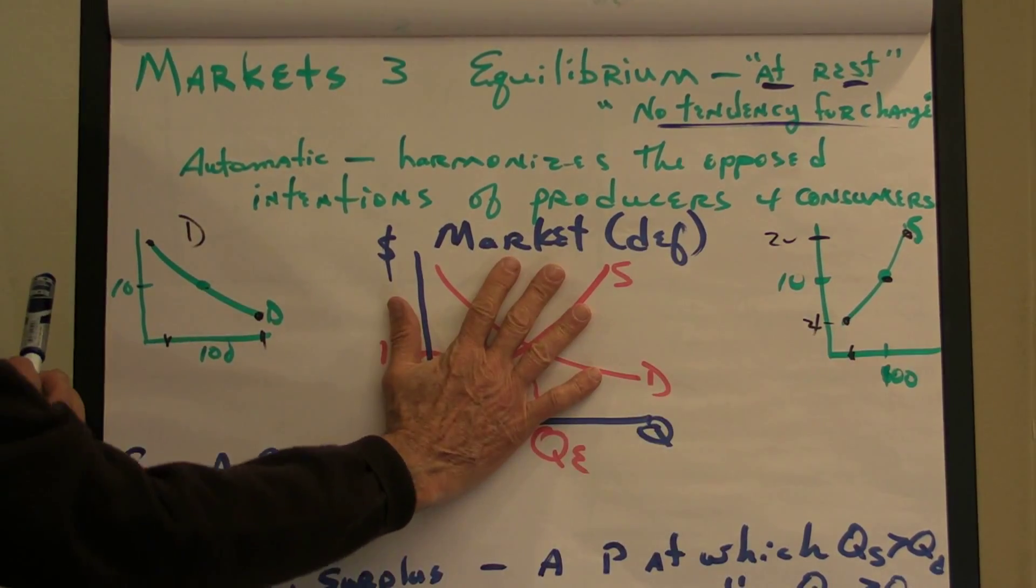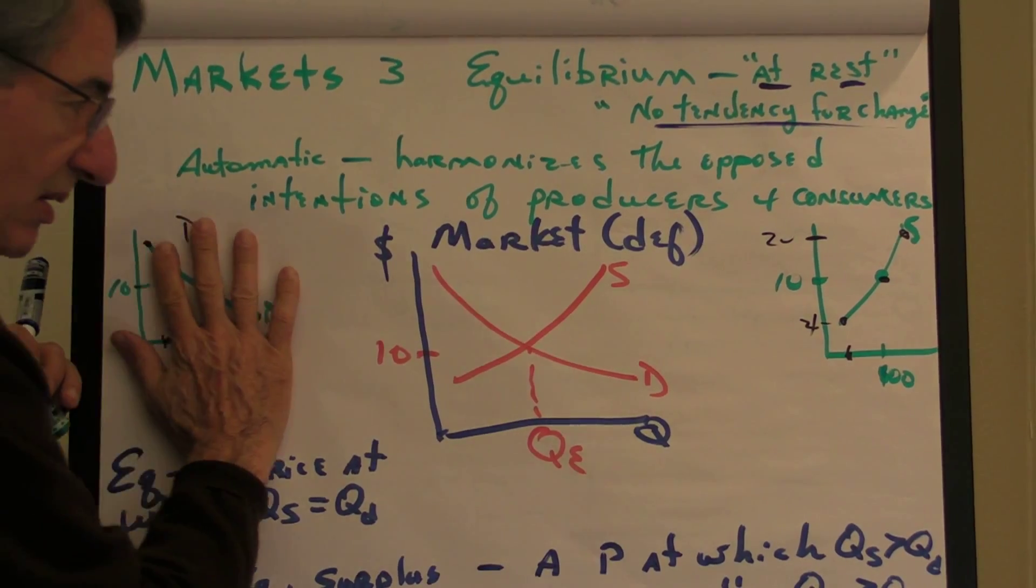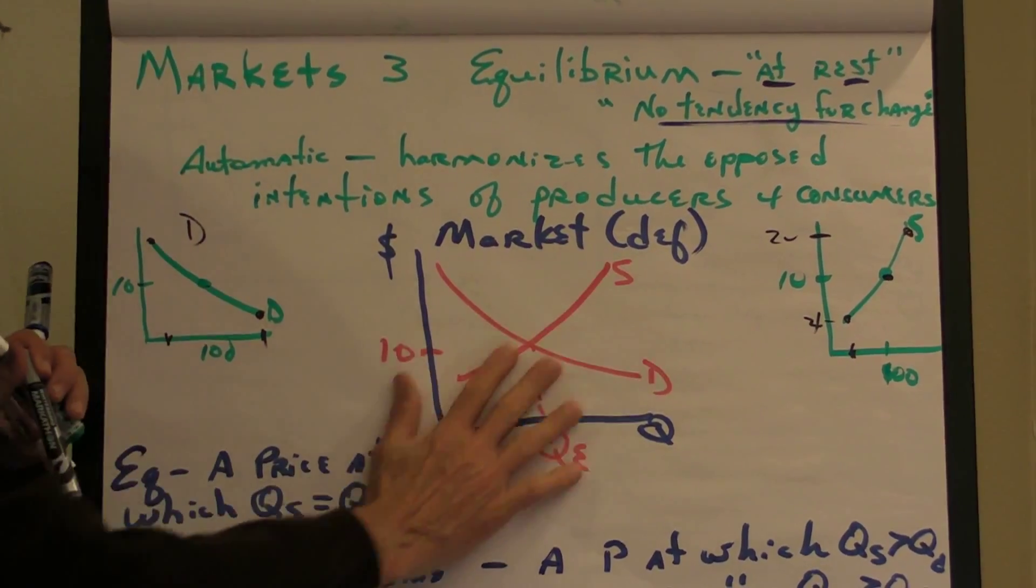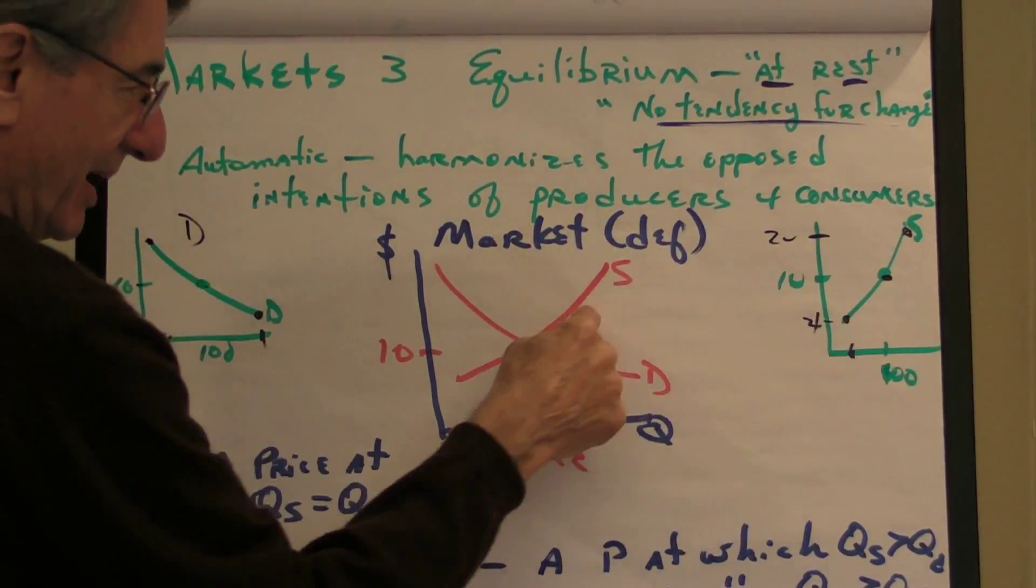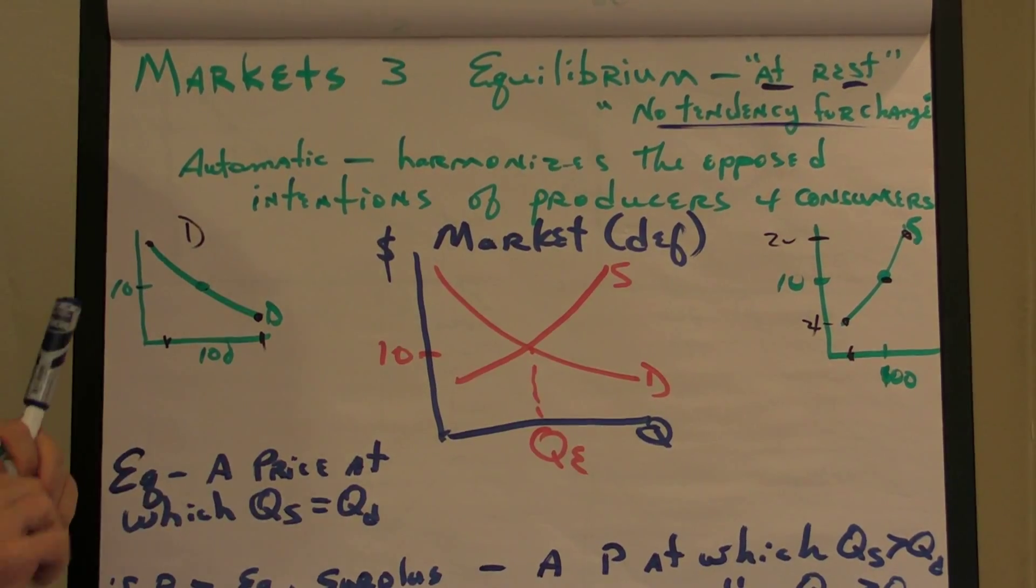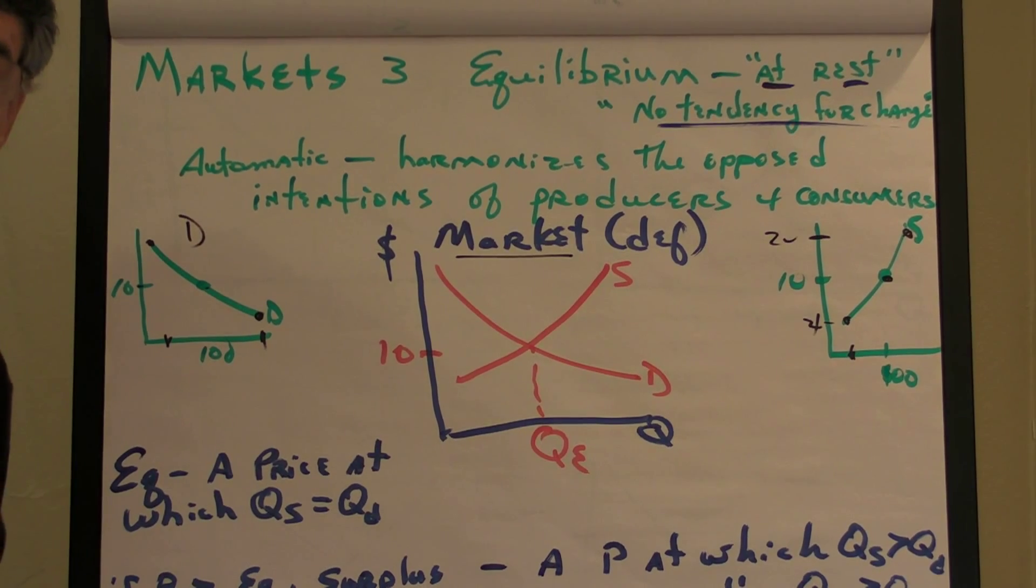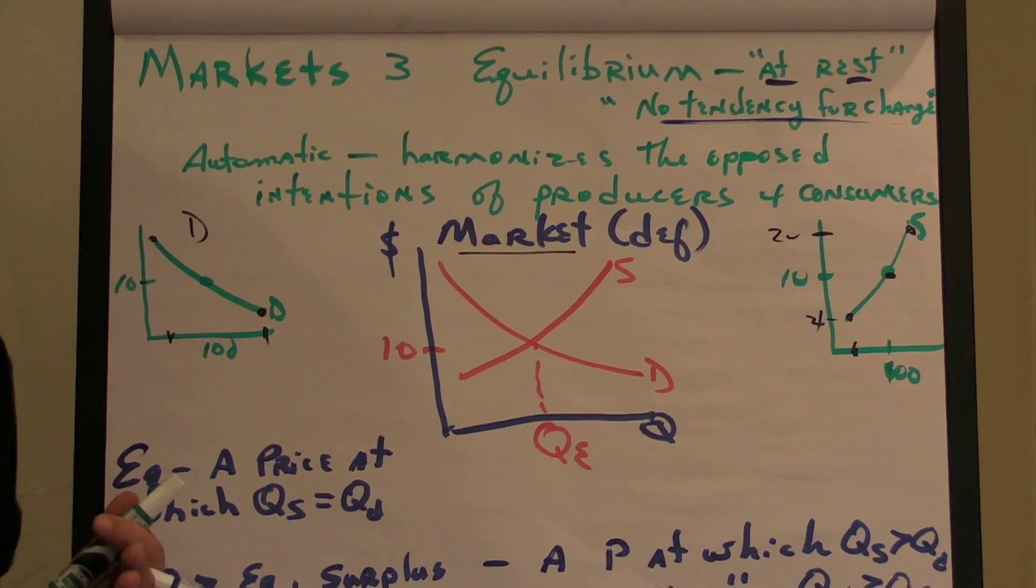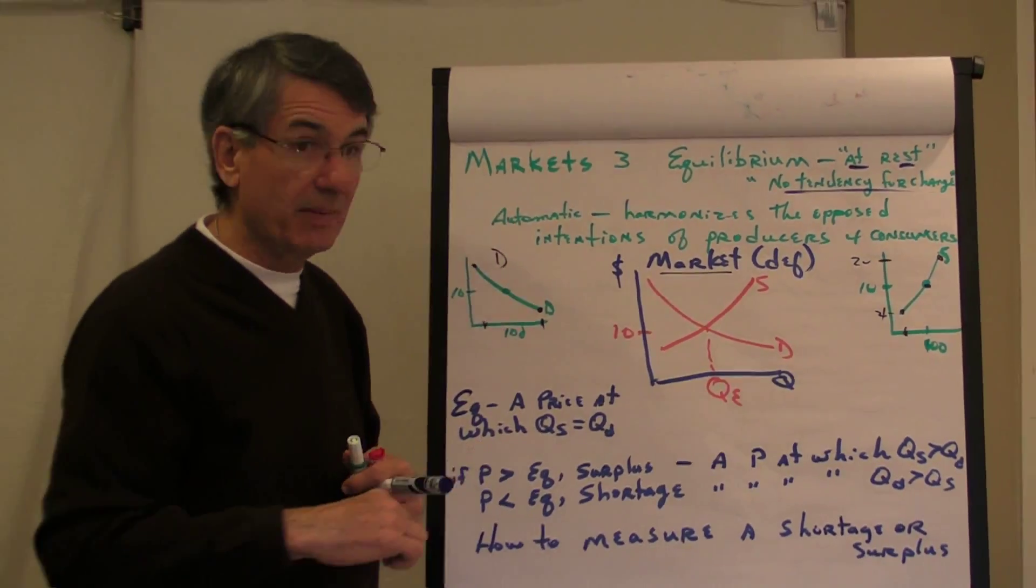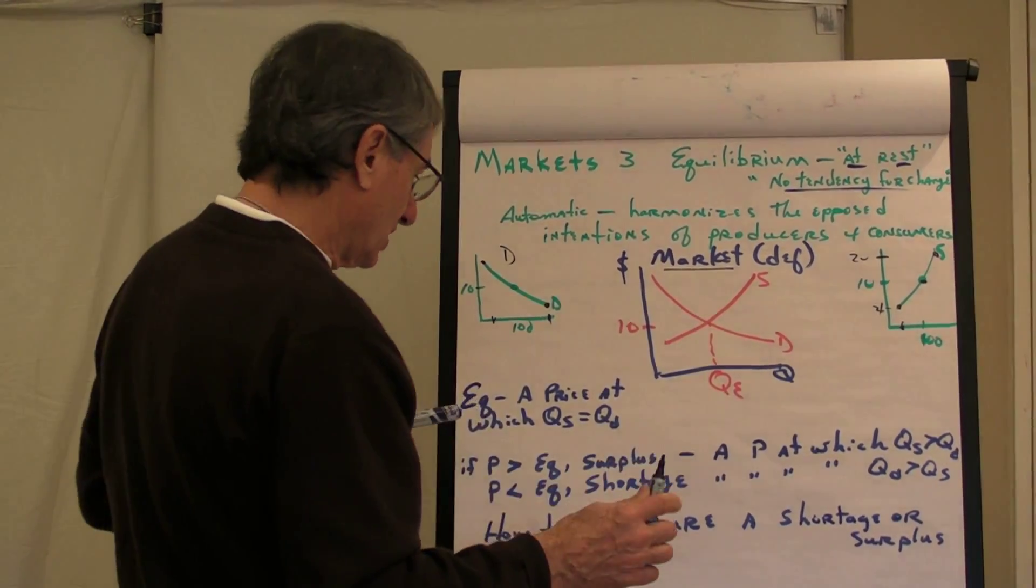Suppliers bring their supply curves to market. Consumers bring their demand curves to market. And they produce an interaction between buyers and sellers. And the definition of a market is any process by which buyers and sellers interact with each other, make exchanges with each other.